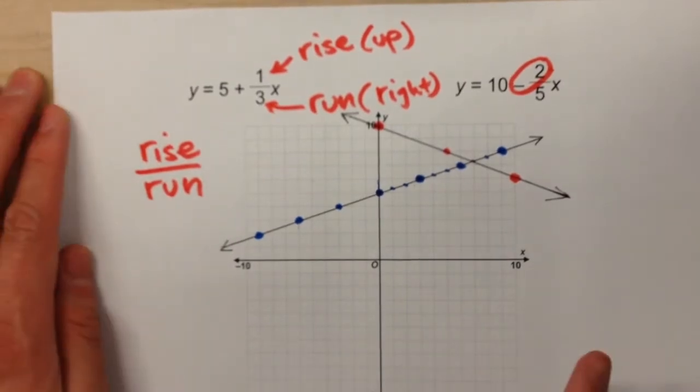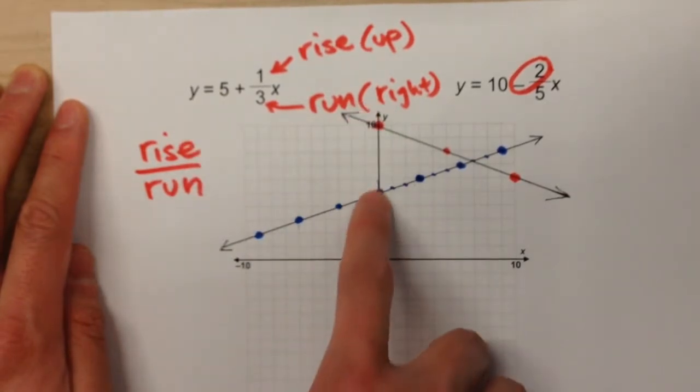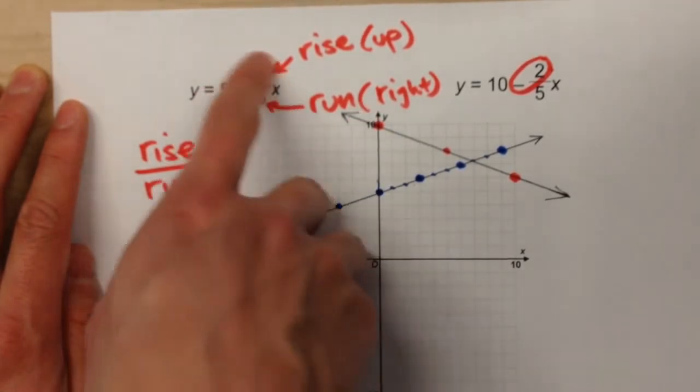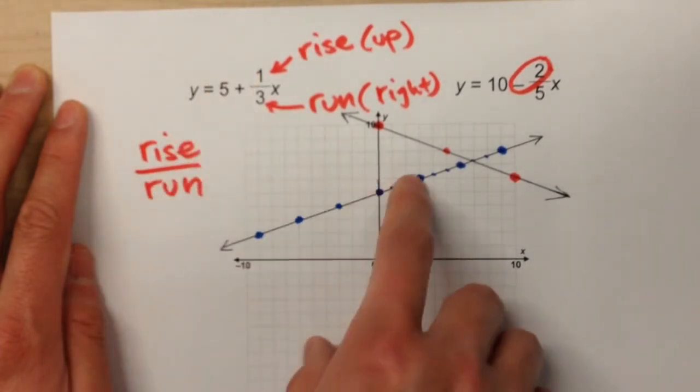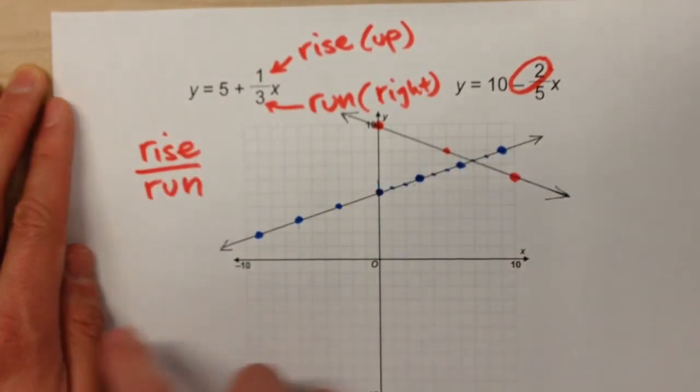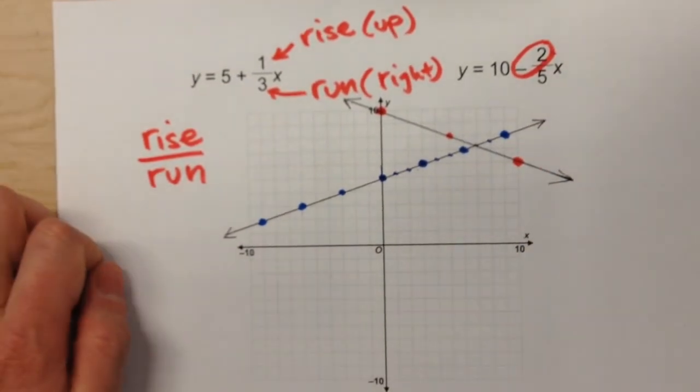So to summarize, start by finding your y-intercept and plotting that on your y-axis. And then use the slope and the rise and the run to find the pattern of your graph. Draw your line. Arrows on the ends. You're good to go.